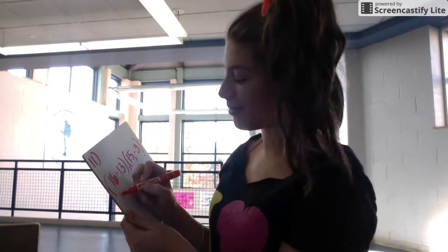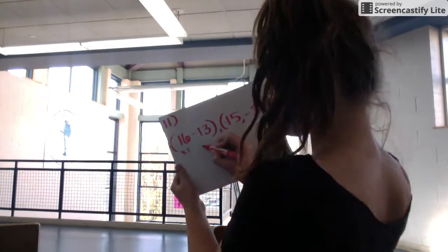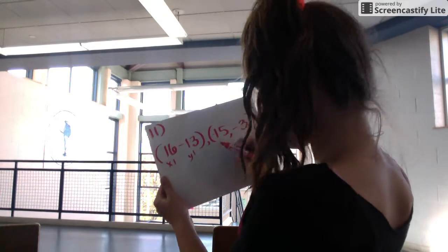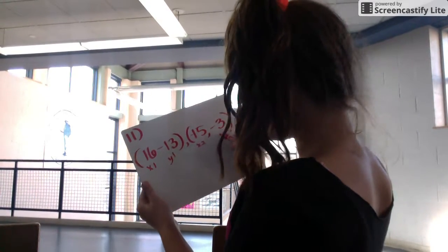Okay, so we're going to find the slope. What you need to do is label it like x and y. So this is x1, this is y1, this is x2, and this is y2.